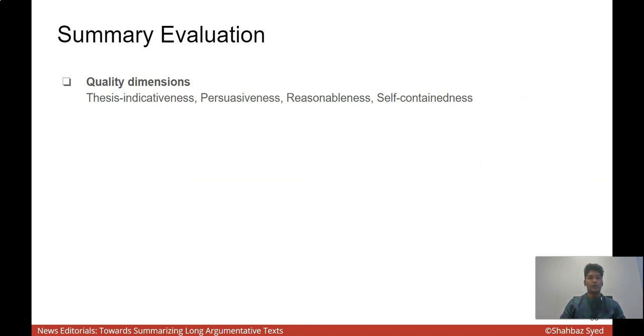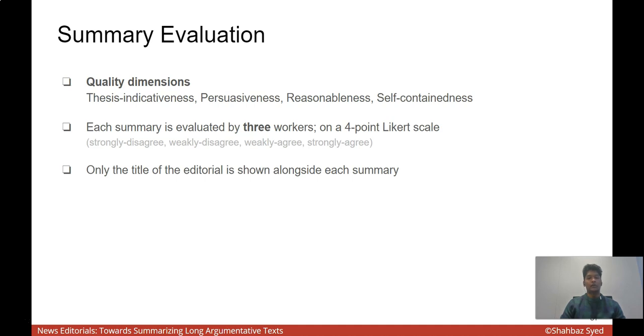For evaluation, we qualitatively evaluated all dimensions except conciseness. Each summary was evaluated by three workers on a four-point Likert scale. We showed only the title of the editorial alongside each summary. We did this for two reasons. The first is to reduce the cognitive effort required by workers to read the editorial and then to read the summaries and then to judge them. The second is that on manual inspection, we found that each title sufficiently indicates what the editorial will be about. This allows us to also indirectly evaluate the thesis indicativeness of the summary and if the summary is relevant to an editorial with this title. We label a summary as high quality according to majority work if it has at least three of the four quality dimensions listed above.